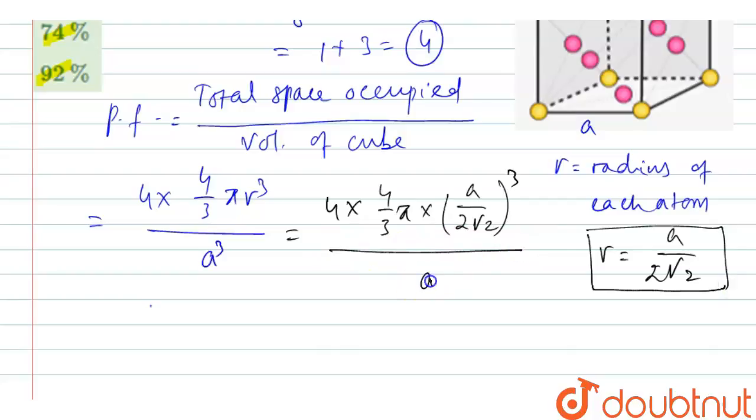So divided by a³, which equals 4 times 4/3 π, where π is 3.14. Here, a³/(8 times 16√2). This is (2√2)³, that is 16√2 times a³. a³ cancels and which on simplification...